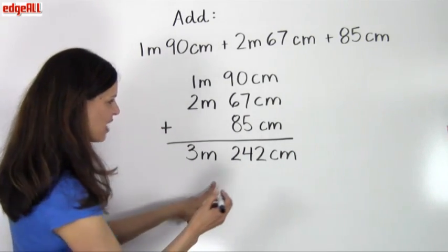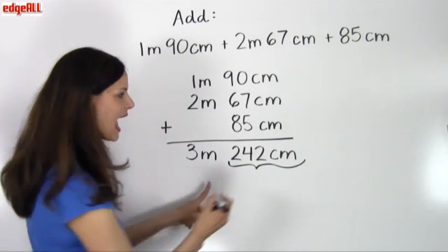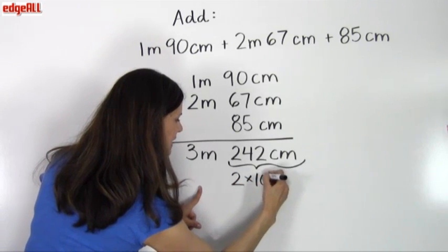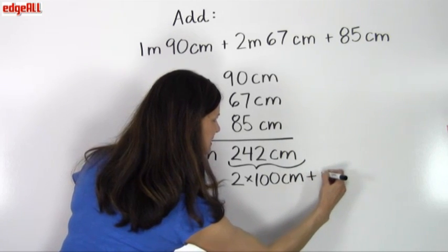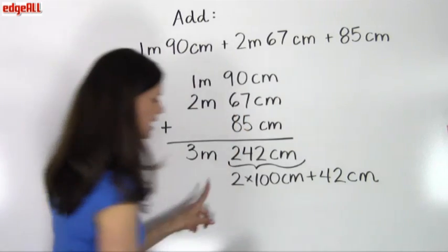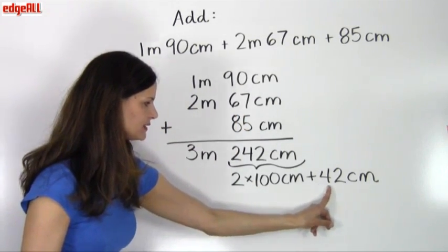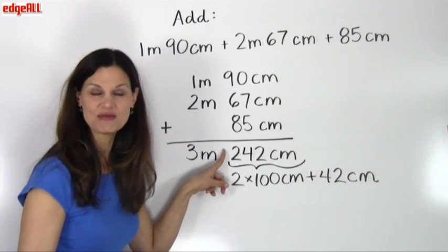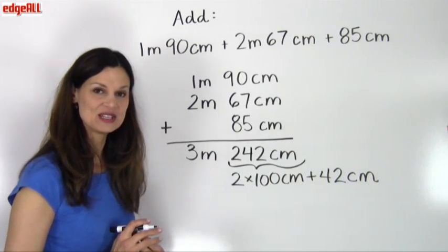So let's look at that written out. I can take this 242 centimeters and I can think of it as 2 times 100 centimeters plus 42 centimeters. So this is the same, 2 times 100 centimeters plus 42 centimeters is the same as 242 centimeters. I've simply split it up into two different parts.